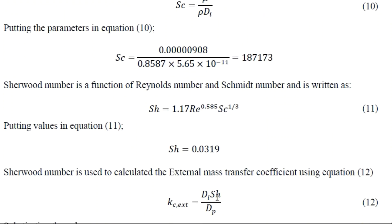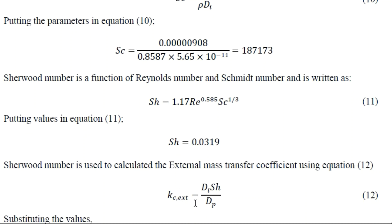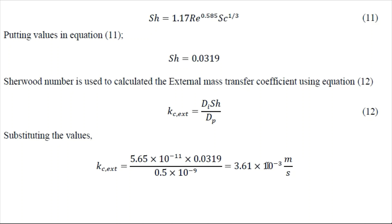Which is 1.17 into Reynolds number power 0.585 into Schmidt number power 1 by 3. So once we have obtained this Sherwood number, then Sherwood number is basically Kc_external into DP by DI. So we basically rearrange it to get the value of external mass transfer coefficient. So substituting these values we obtain the external mass transfer coefficient as 3.61 into 10 to the power minus 3 meter per second.